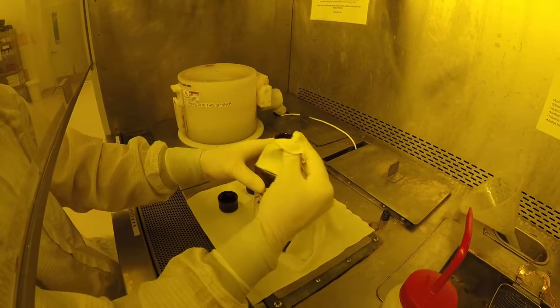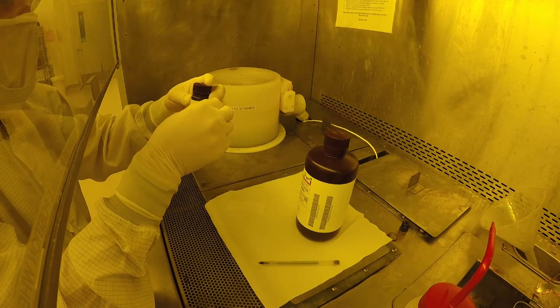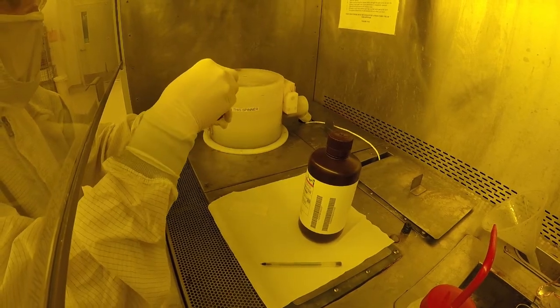Label your personal resist bottle with your name, resist name, date of pour, and expiration date. Finally, return the bulk resist bottle to the storage area.